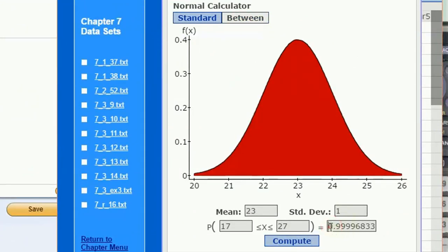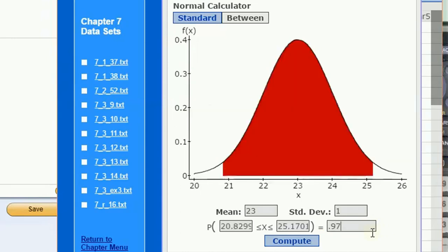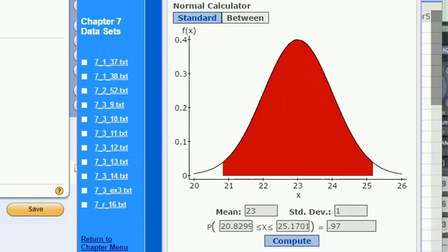The between calculator, if you type in a probability, will always find symmetric cutoffs symmetric about the mean. You can see what we have rounded to the nearest whole numbers, it's 21 days to 25 days.